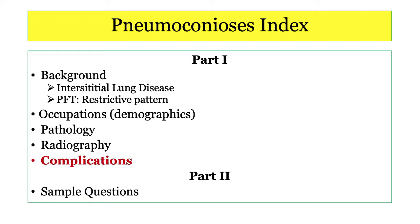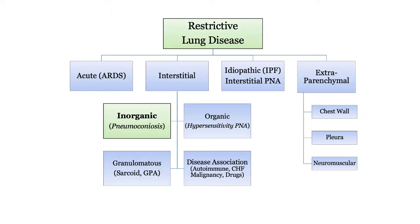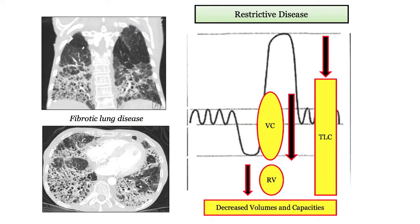The pneumoconioses are classified as restrictive lung disorders, with characteristic patterns noted on pulmonary function testing. As such, you should be familiar with the PFT characteristics of restriction, covered in a separate video, including decreased lung volumes and capacities, and in particular total lung capacity and vital capacity.